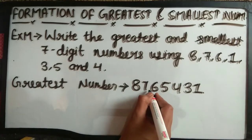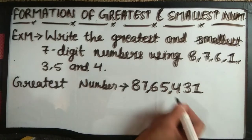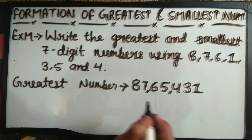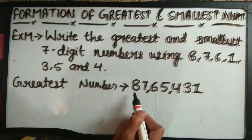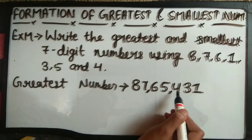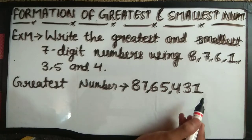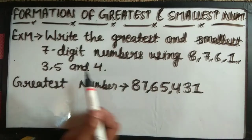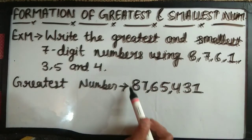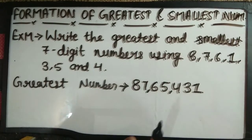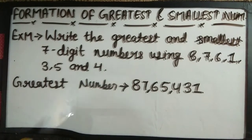We will put a comma here and here. So this is 87,65,431. In 7 digits, this is the biggest number. And now what we have to do, we have to write the smallest number.